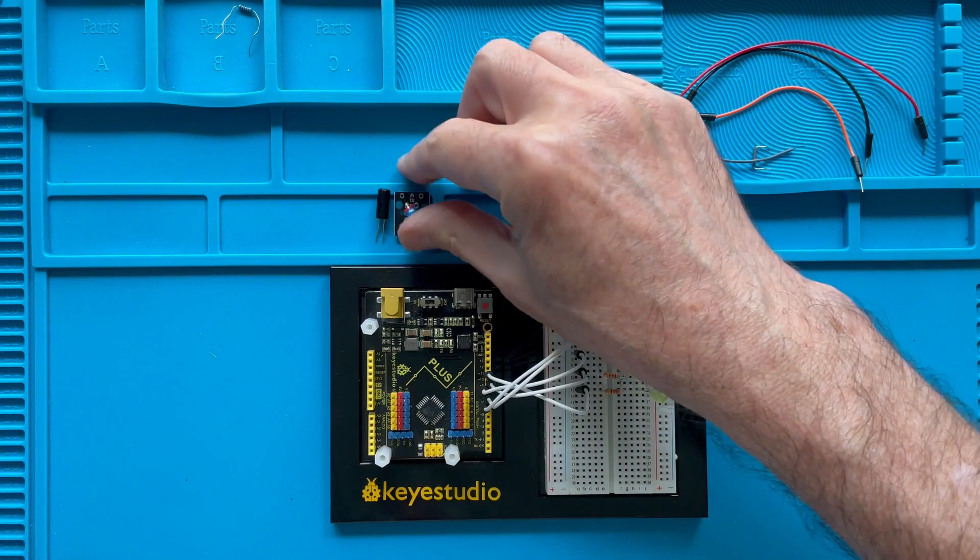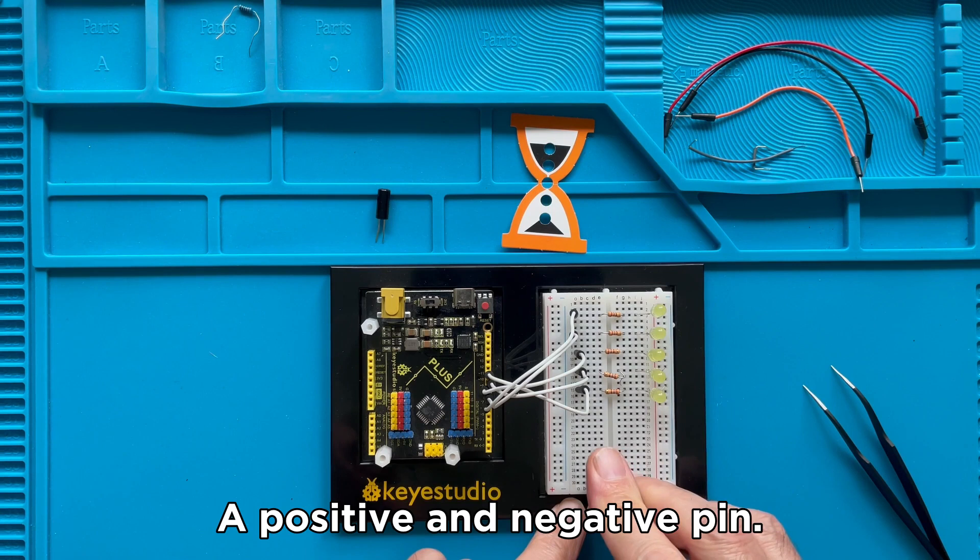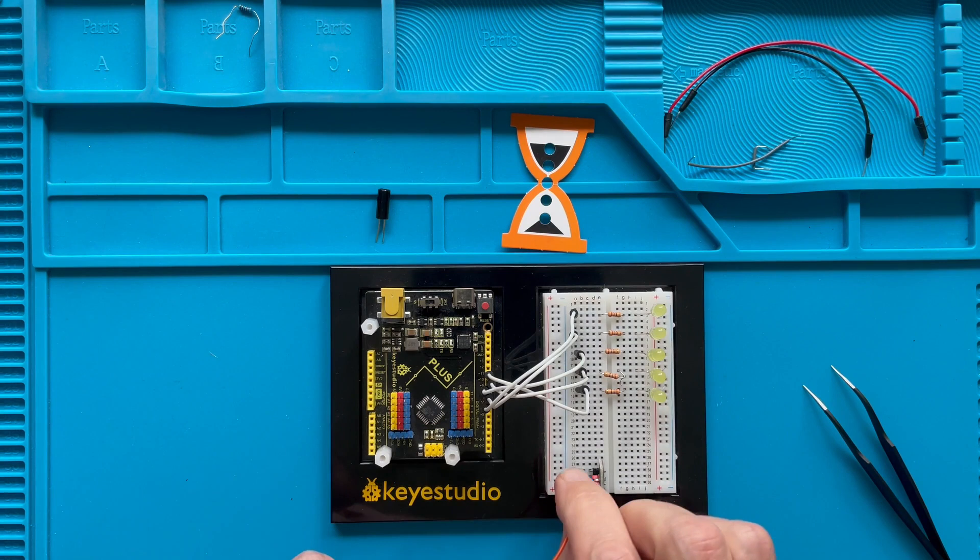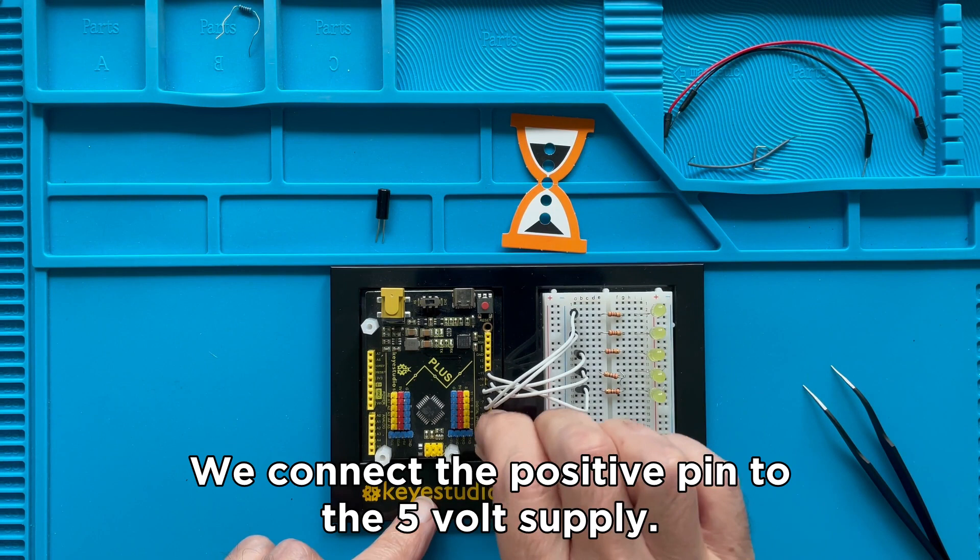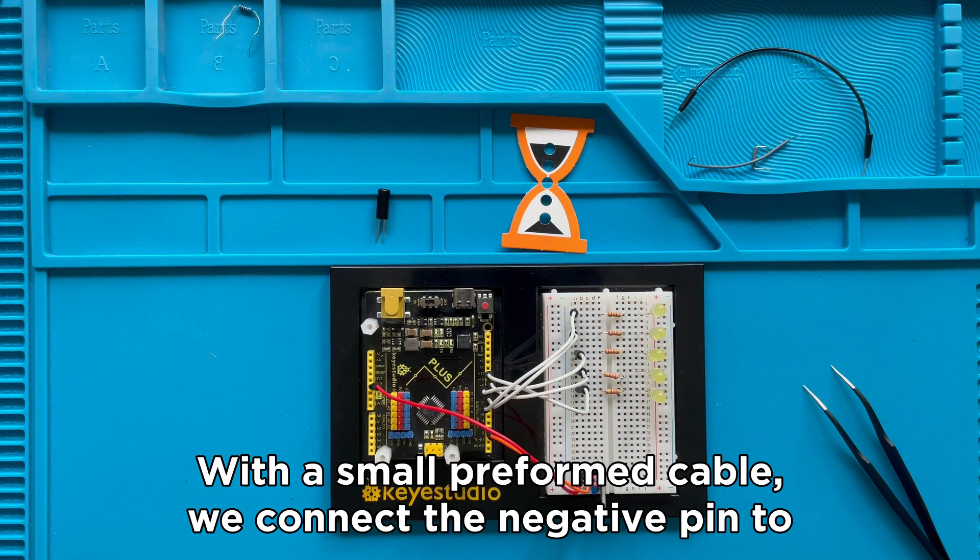The tilt switch has three pins. A positive, a negative and a signal pin. We connect the signal pin to digital pin number 3 on the microcontroller. We connect the positive pin to the 5 volt supply. And with a small preformed cable, we connect the negative pin to the bottom negative rail.